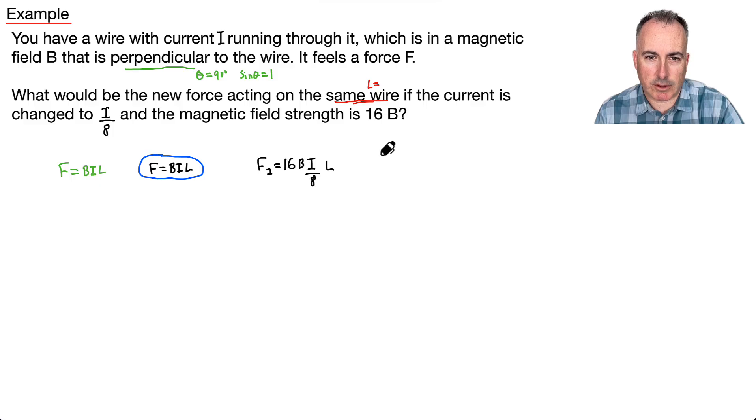Okay, let's maybe fix up this equation here for F2, this new force. It's going to be, let's see, 16 over 8 is just a 2. So I could say it's 2BIL.